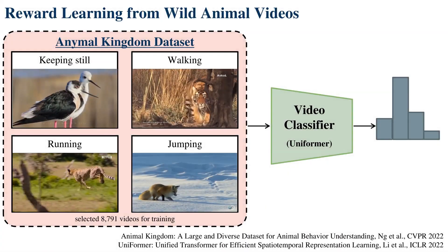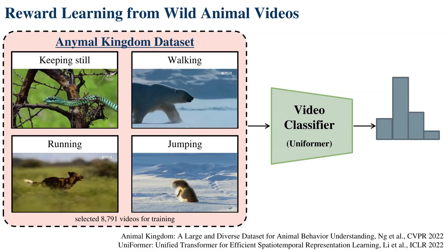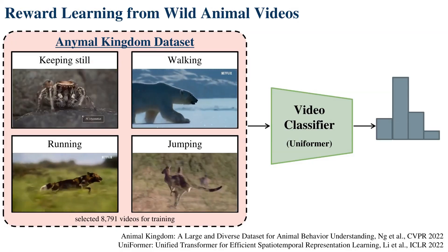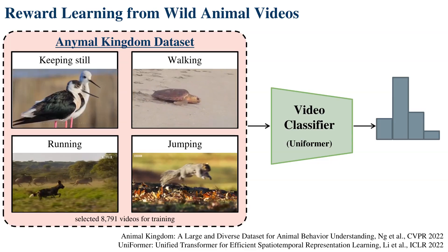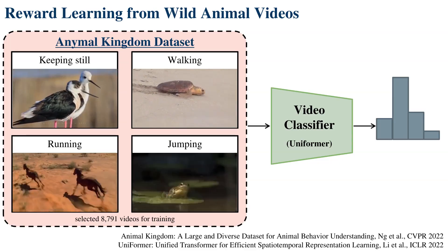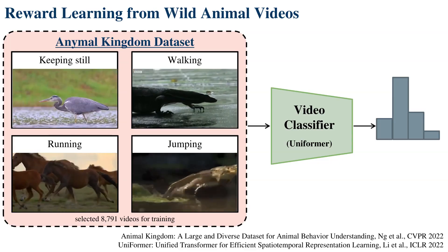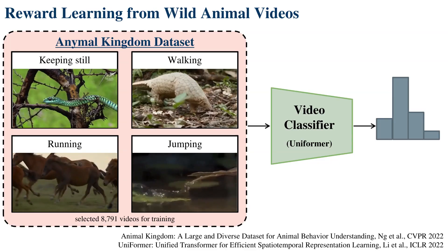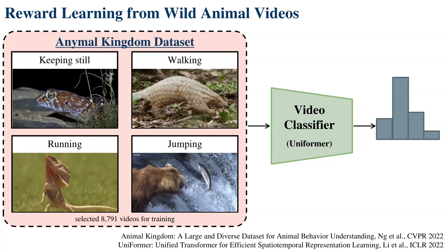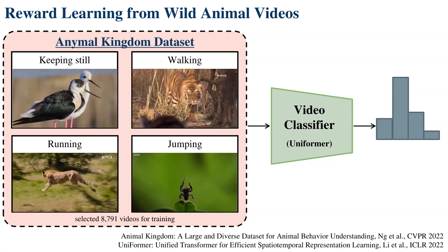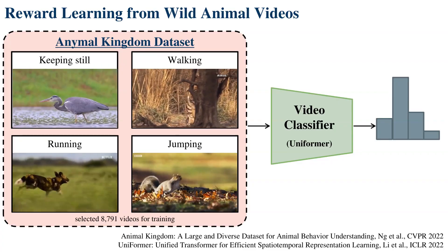In the first stage, we learn abstract locomotion concepts by watching thousands of wild animal videos from the Animal Kingdom dataset, a large labeled collection of internet videos. We train a video classifier to recognize actions relevant to legged robots across diverse animals in their various natural habitats.